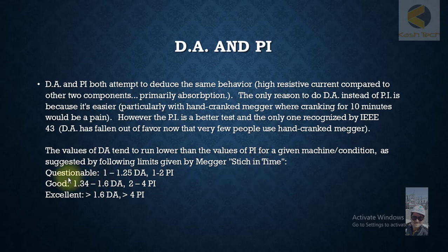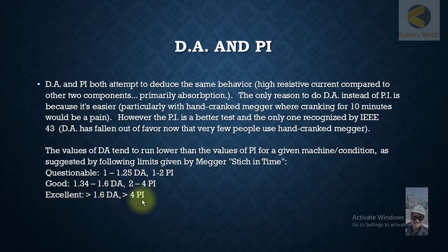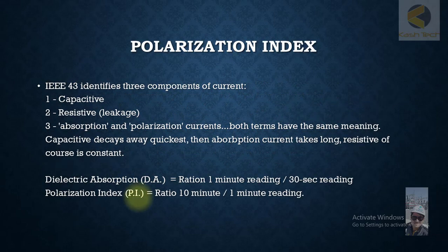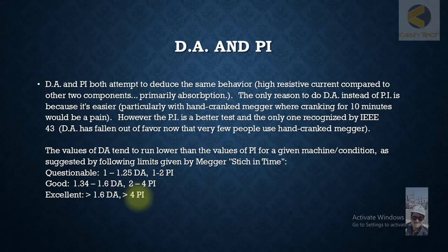If you are getting a DA ratio between 1 to 1.25, or PI between 1 and 2, then it's questionable insulation and you have to check it — it might not be good. If the DA value is between 1.34 to 1.6, or PI is between 2 to 4, then it's okay. If DA is above 1.6 or PI is greater than 4, then it's excellent. Thank you very much.